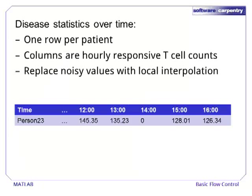To introduce loops, we will use a running example from statistics. Suppose we are given a matrix of disease statistics. Each row is a patient, and we have their T cell counts at each hour. Unfortunately, the T cell count is missing for some time points.